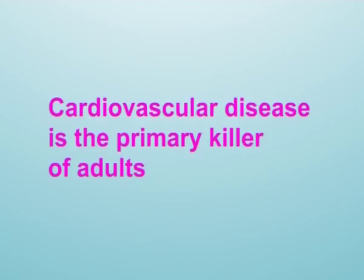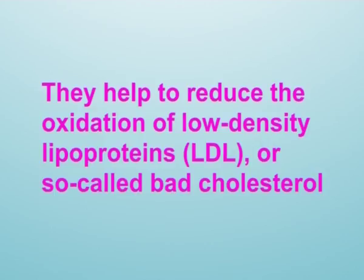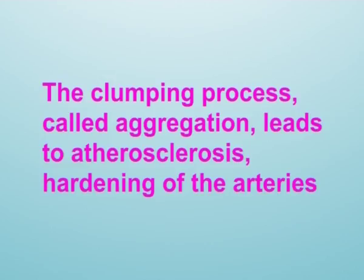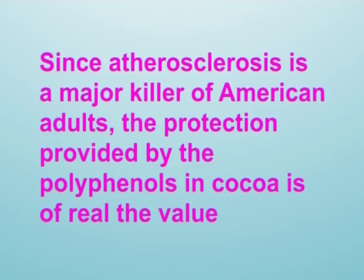Cardiovascular disease is the primary killer of adults. The polyphenols in cocoa are cardioprotective in two ways: they help reduce the oxidation of low-density lipoproteins (LDL), so-called bad cholesterol — oxidation of LDL is considered a major factor in promoting coronary diseases, most notably heart attack and stroke. Additionally, polyphenols inhibit blood platelets from clumping together; this clumping process, called aggregation, leads to atherosclerosis, or hardening of the arteries. By inhibiting aggregation, polyphenols reduce the risk of atherosclerosis, which can literally mean the difference between life and death.